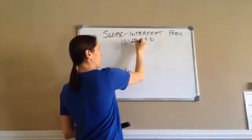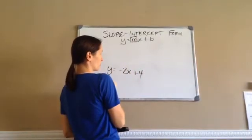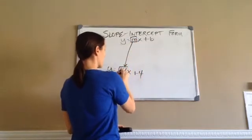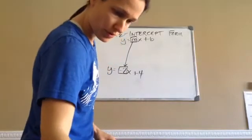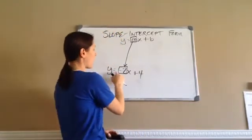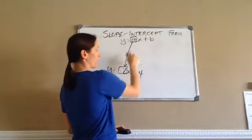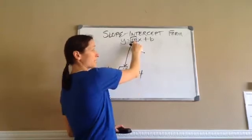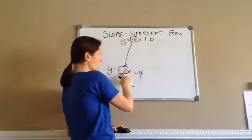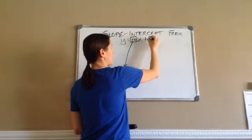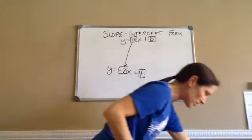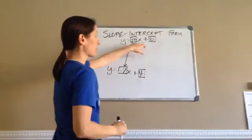What is my m on this problem? x, 2. y, 2. m is a negative 2. See that? y equals a negative 2 right here. y equals negative 2x plus b. So, what is my m? Negative 2. What is my b? Positive 4.